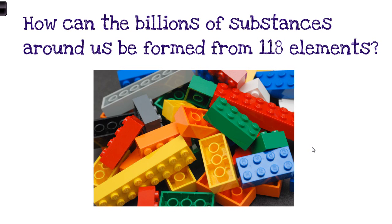Even though there are only 118 different elements, there are so many of each that we can combine them in so many different combinations to make all the different things around us. Most of the substances around us are compounds or even mixtures — if everything were made of elements there'd only be 118 different possible things. In fact, most things around us are mainly made from just four elements, arranged and pieced together in different ways to make different compounds, each a totally new substance with new properties. That's why we have so many different materials, each with their own set of characteristics.